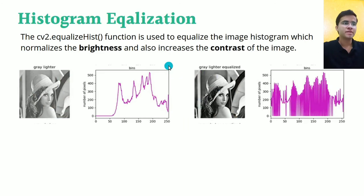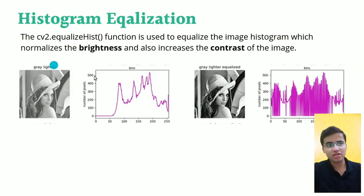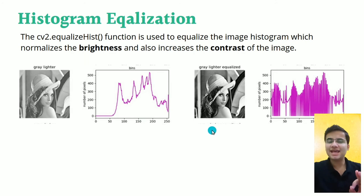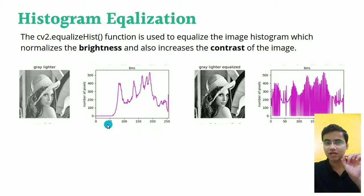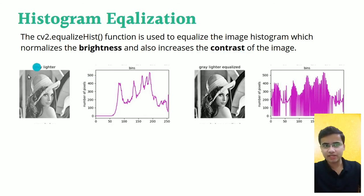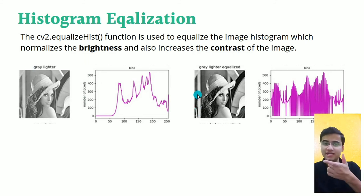Now comes histogram equalization. We have a normal light image being captured. As computer vision engineers, we observe that the histogram peaks are constrained to a narrow range of values. Histogram equalization means using every bin — equalizing the image histogram — which normalizes the brightness and also increases the contrast of an image. If the image is too bright, equalization normalizes that brightness and enhances the contrast.